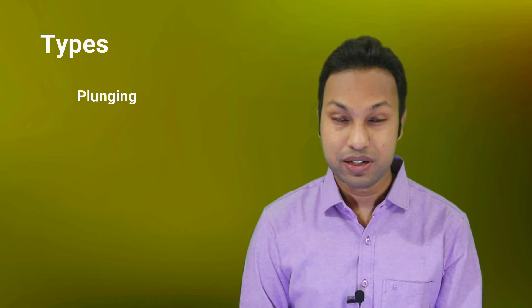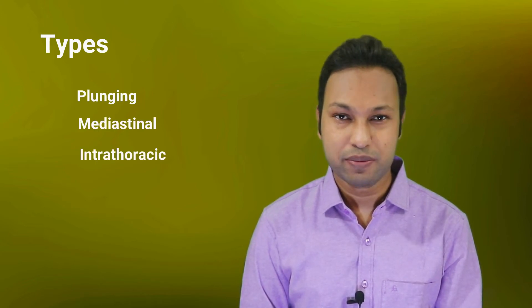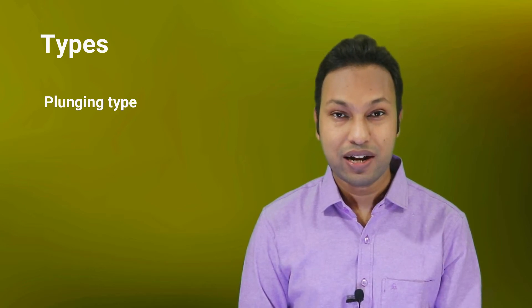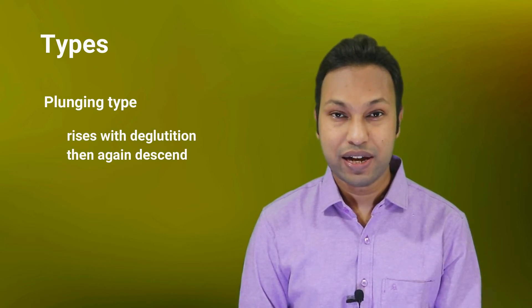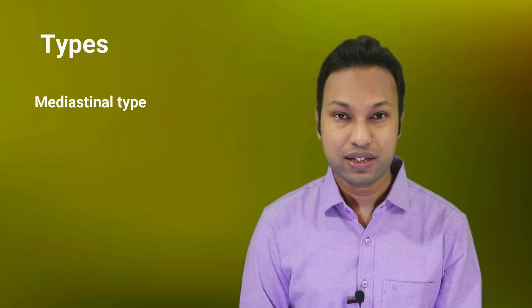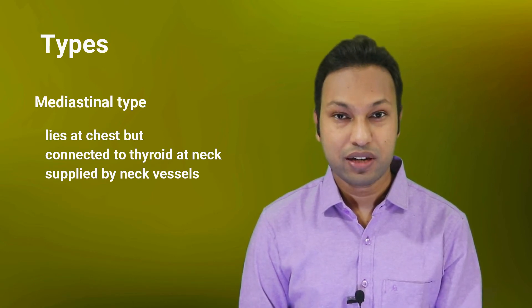A retrosternal goiter may be of three types: plunging type, mediastinal type, and intrathoracic type. The plunging type of goiter rises with deglutition and then descends again through the thoracic inlet. Mediastinal goiter lies wholly in the chest but is connected to the thyroid gland and is supplied by the thyroid vessels.